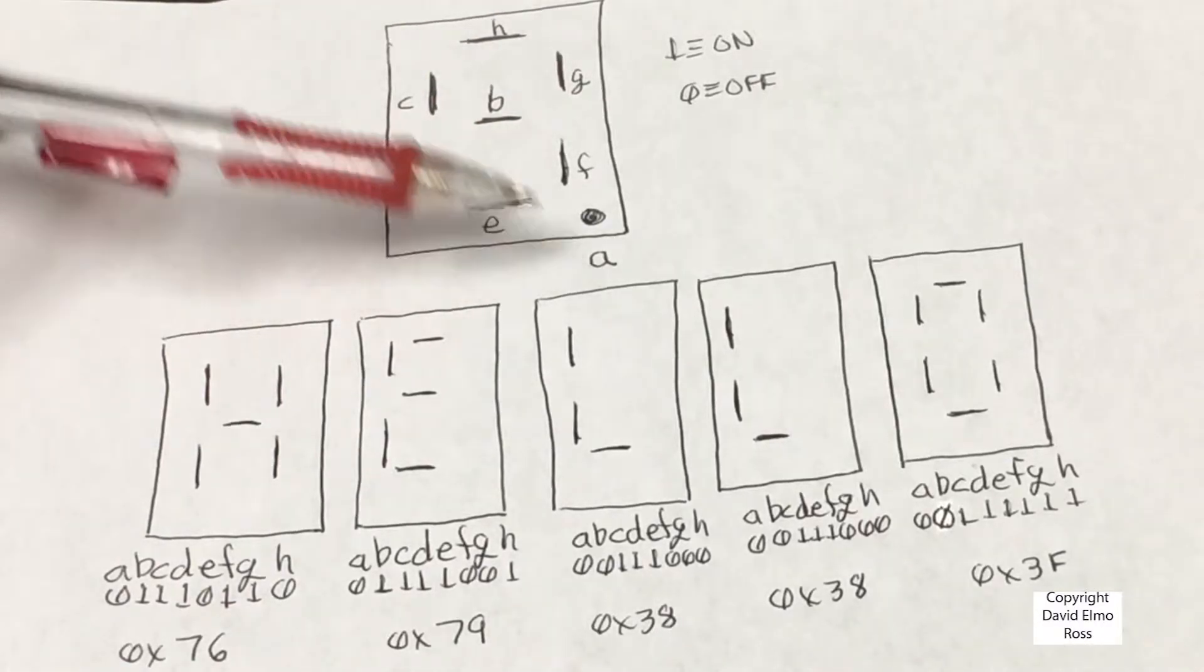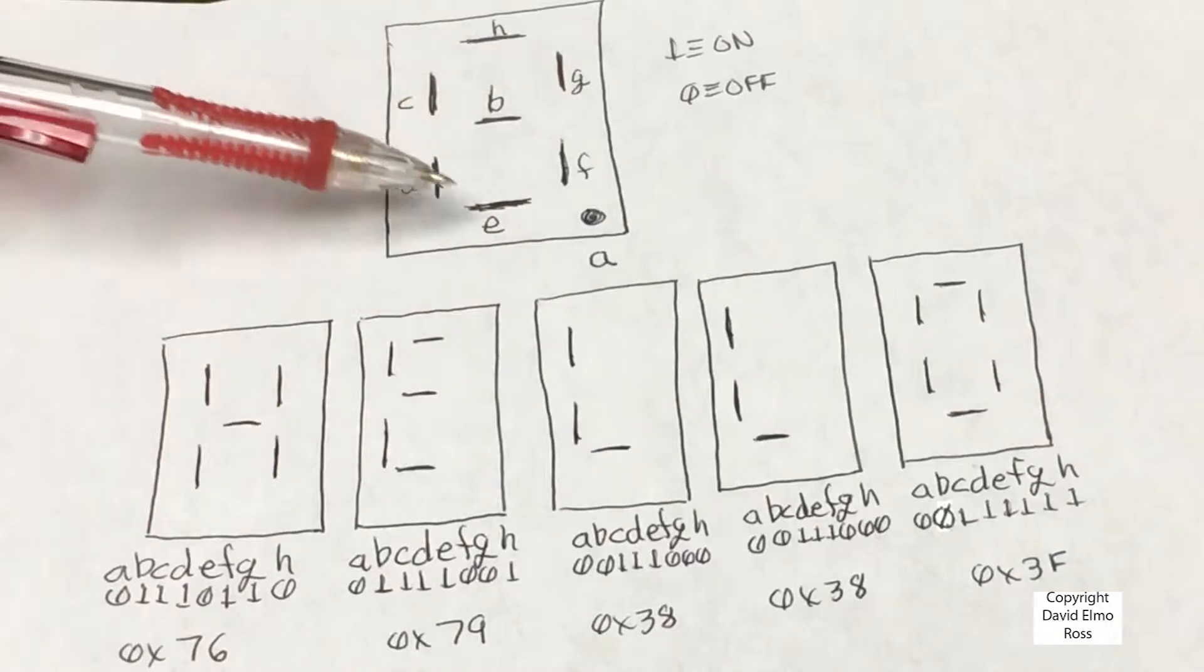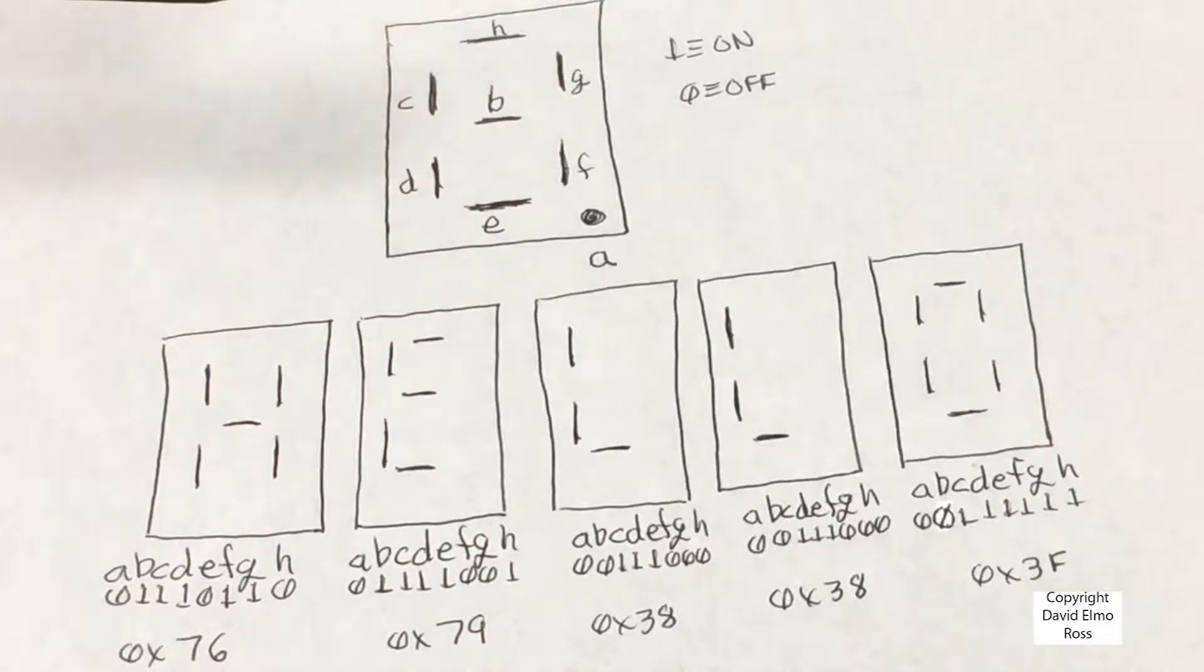And the labeling for this is A, B, C, D, E, F, G, and H. Now any one of these segments to turn it on is a one, to turn it off is a zero.